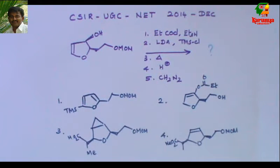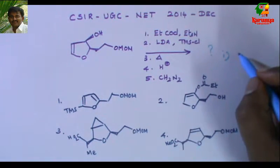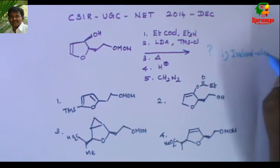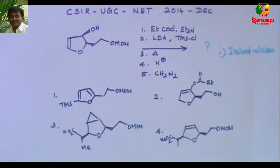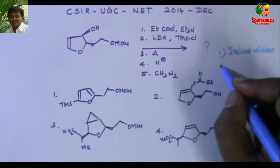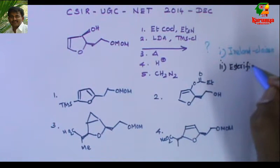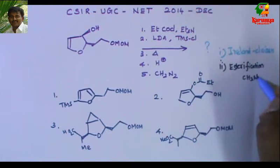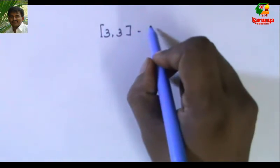To solve this, you should know Ireland Claisen rearrangement — basically it is a modification of Claisen rearrangement — and second, esterification with diazomethane. First I would like to give some idea about 3,3-sigmatropic rearrangement.